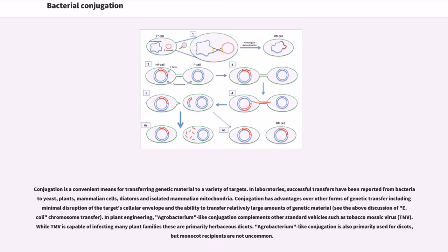Conjugation is a convenient means for transferring genetic material to a variety of targets. In laboratories, successful transfers have been reported from bacteria to yeast, plants, mammalian cells, diatoms and isolated mammalian mitochondria. Conjugation has advantages over other forms of genetic transfer including minimal disruption of the target's cellular envelope and the ability to transfer relatively large amounts of genetic material. See the above discussion of E. coli chromosome transfer.